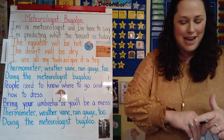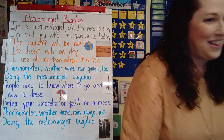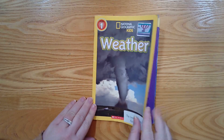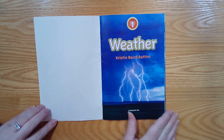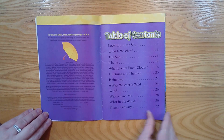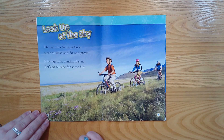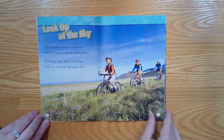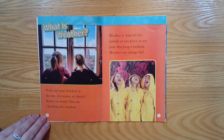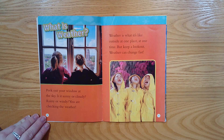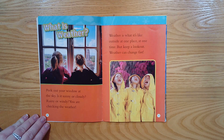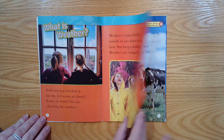Now today I have a fantastic story to read to you. I hope you're ready, because it's all about weather. There's a table of contents — we'll read some of these pages today, friends. Look up at the sky. The weather helps us know what to wear and do and grow. It brings rain, wind, and sun. Let's go outside for some fun. What is weather? Peek out your window at the sky. Is it sunny or cloudy? Rainy or windy? You are checking the weather. Weather is what it's like outside at one place at one time. But keep a lookout — weather can change fast.